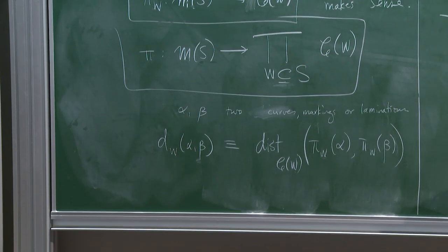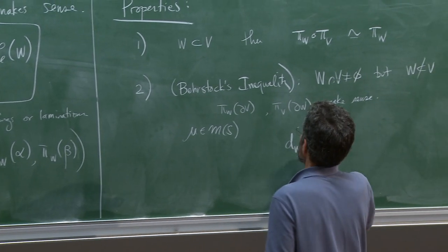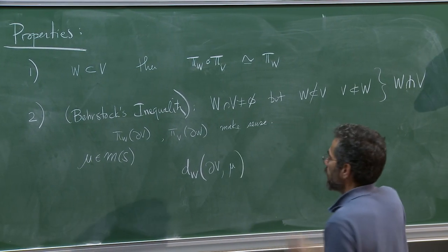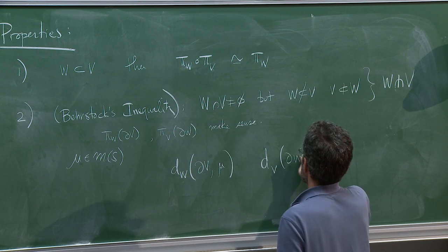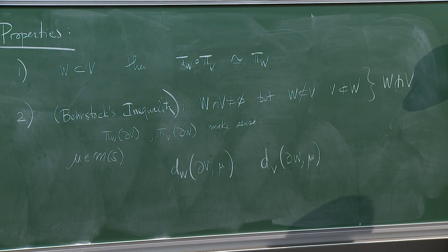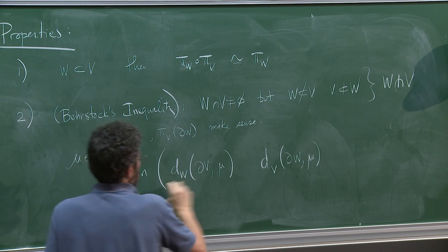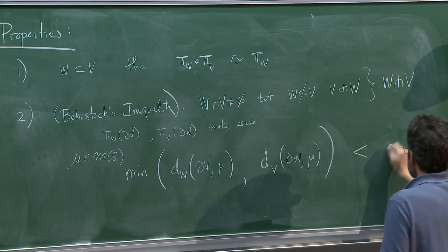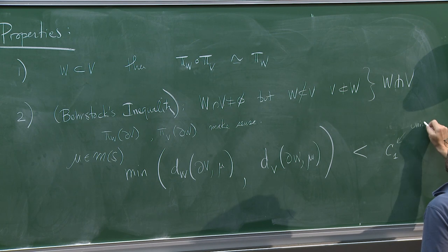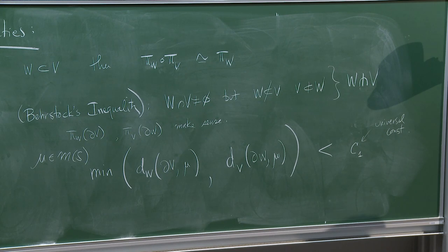So here's the inequality. I can compute the distance in W between boundary V and mu (where mu is some point), and I can compute the distance in V between boundary W and mu. These are two numbers, and the inequality says that at least one of them is small: the minimum of these two numbers is at most some constant C1, where C1 is some uniform universal constant independent of anything here.